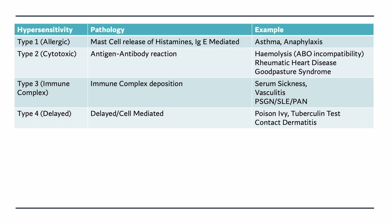An important distinction: post-streptococcal rheumatic heart disease is type 2 because it is antigen-antibody mediated, whereas post-streptococcal glomerulonephritis is a type 3 reaction. Type 4 is delayed — you get exposed and about 24 hours later you see a rash. It is commonly seen with poison ivy or nickel-induced contact dermatitis. The Mantoux test is also an example of type 4 hypersensitivity reaction.